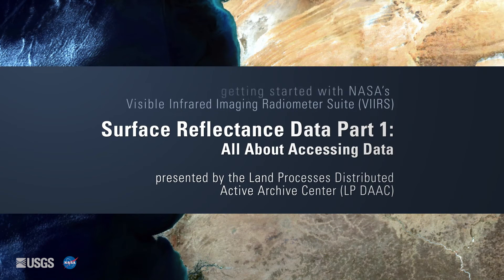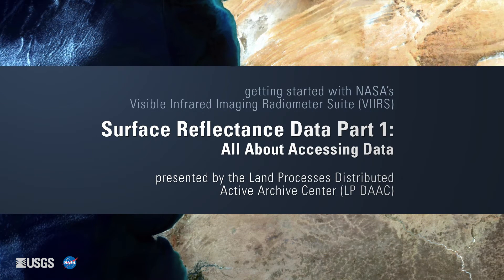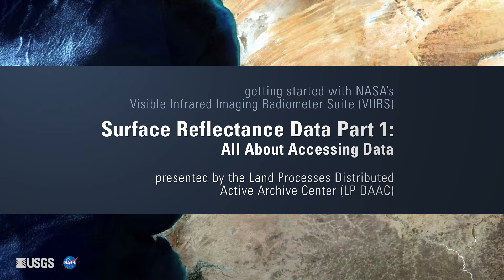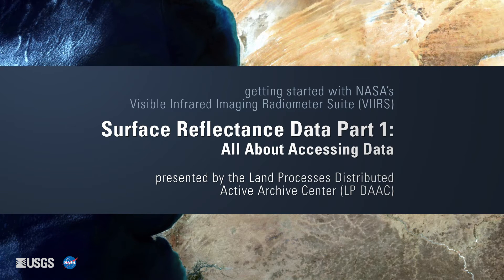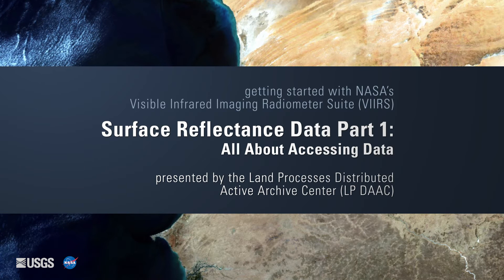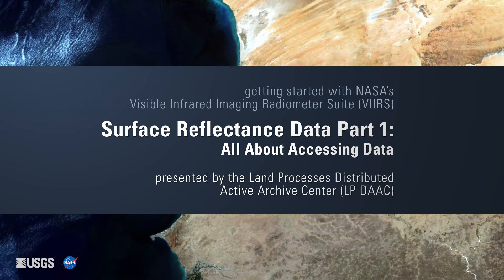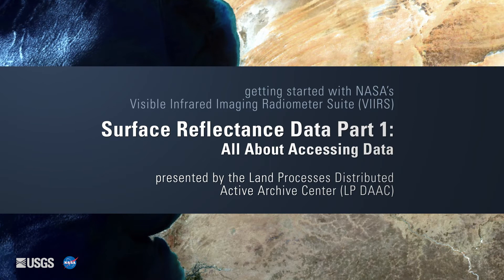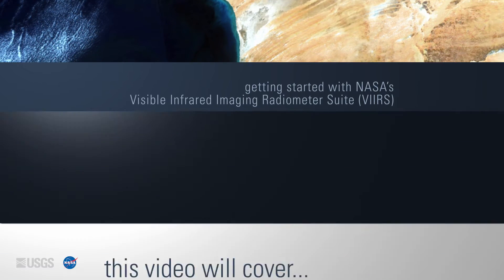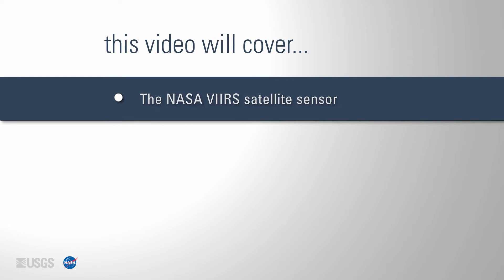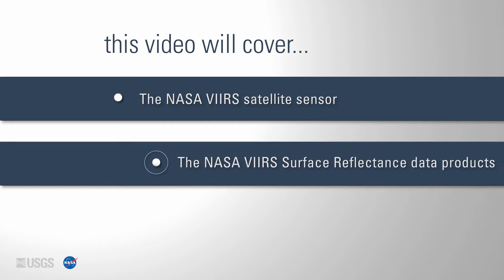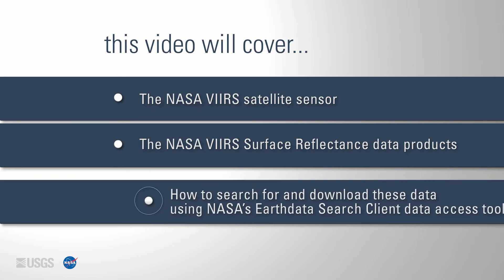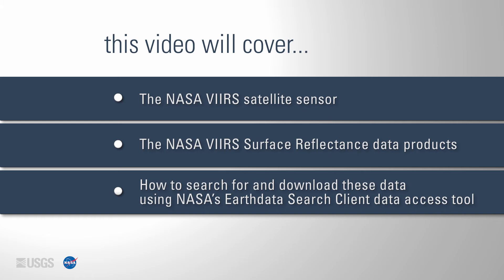Getting Started with NASA's Visible Infrared Imaging Radiometer Suite, or VIIRS, Surface Reflectance Data Part 1: All about accessing data. Presented by the Land Processes Distributed Active Archive Center, or LP DAAC. This video is Part 1 of the Getting Started with NASA's VIIRS Surface Reflectance Data Video Series. This video will provide information about the NASA VIIRS satellite sensor, the NASA VIIRS surface reflectance data products, and how to search for and download these data using NASA's EarthData Search Client data access tool.